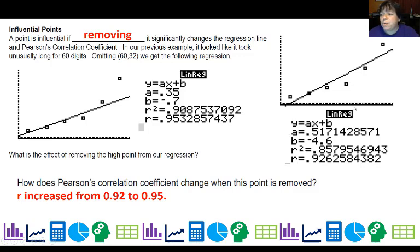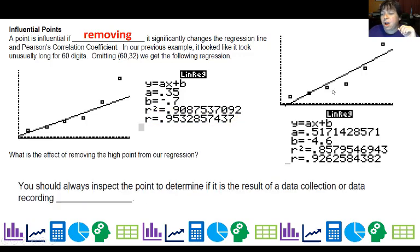So figuring out which point is going to make the biggest difference is part of finding an influential point. Usually, most influential points are kind of far from the center. They tend to be. Because if it's in the center, it's from the average x and the average y. There's your values.